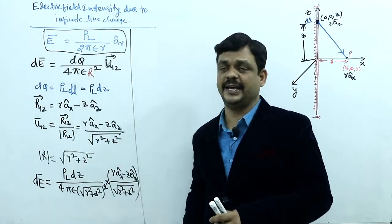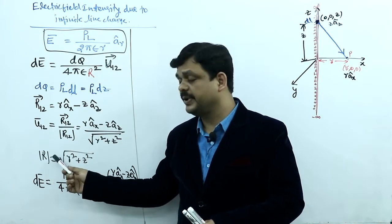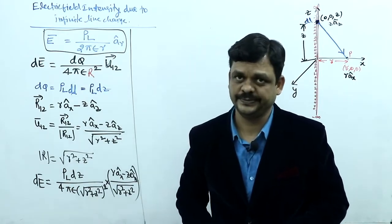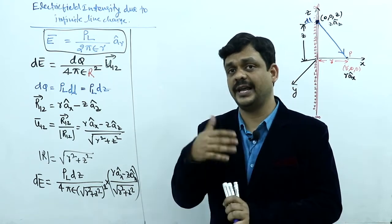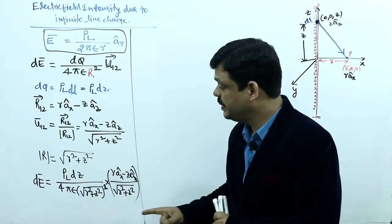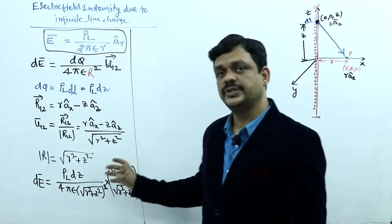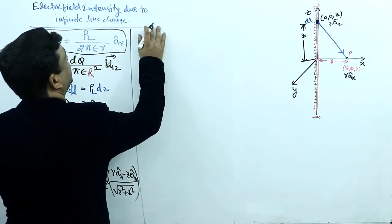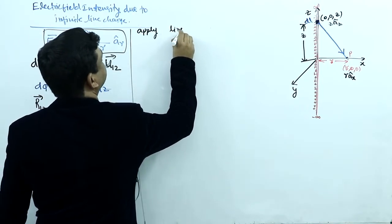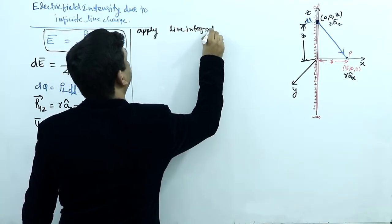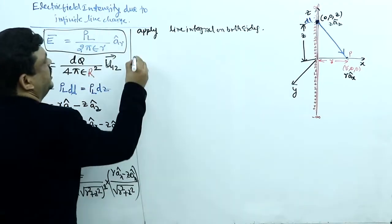To get capital E from dE, we apply integration on both sides. Since there is only one variable parameter (z along the line), a line integral is sufficient. We apply the line integral on both sides.